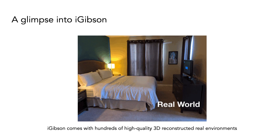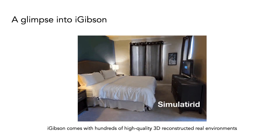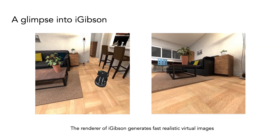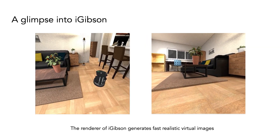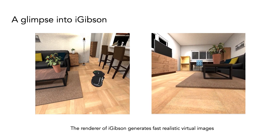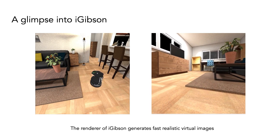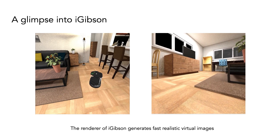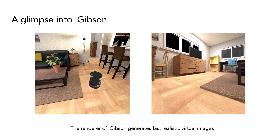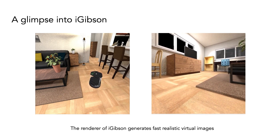Because the reconstructions are from real-world houses and offices, and the interactive objects replace corresponding elements in the reconstructions, the distribution of rooms and objects is as natural as it can get. A crucial component of iGibson is to generate realistic virtual images to enable training robotic agents in simulation and deploying them in the real world. In these videos, you see a third-person view of a robot moving in iGibson and the images acquired from its virtual onboard camera.